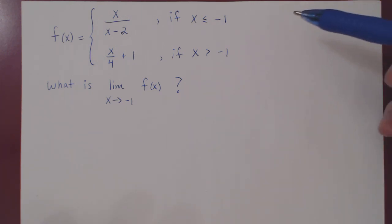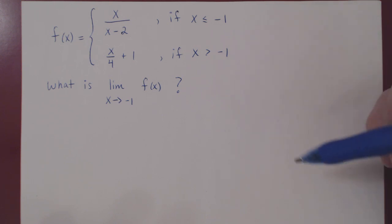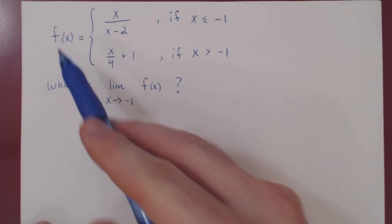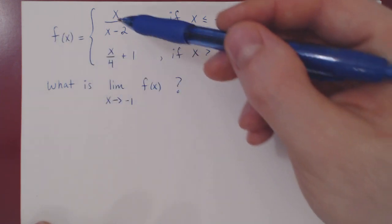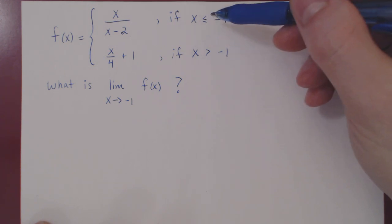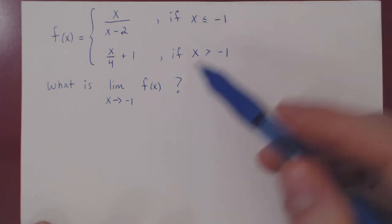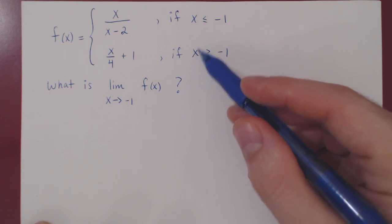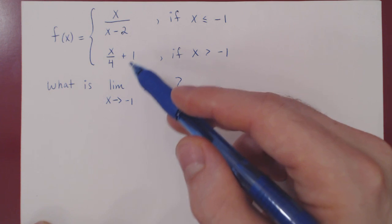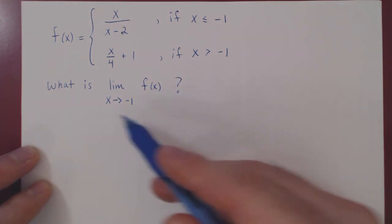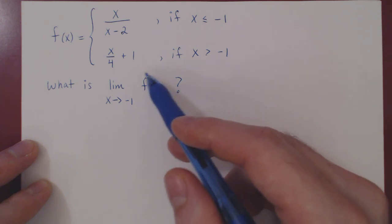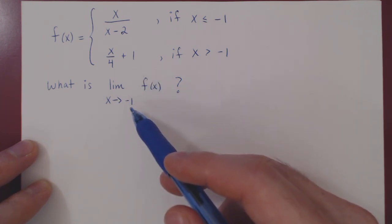In this video we will consider two fairly straightforward algebraic limits. Here's the first function — it is a piecewise function. f of x is equal to x over x minus 2 for all values of x that are smaller than or equal to negative 1, and for values of x greater than negative 1, f of x is x over 4 plus 1. The question is: what is the limit of f of x as x approaches negative 1?